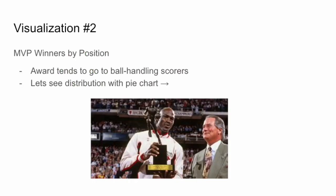For our second visualization, we're going to show the MVP winners by position over the last 20 years. This is interesting because the award tends to go to ball-handling scorers, and there's speculation about how MVP winners in the NBA have been unfairly decided. In the most recent season in this data set, Nikola Jokic, a center, won the award — which is unprecedented. Looking at a list of the last 25 winners by position is one way to see the distribution, but it's ineffective when trying to understand the prevalence of a certain position in the MVP race.